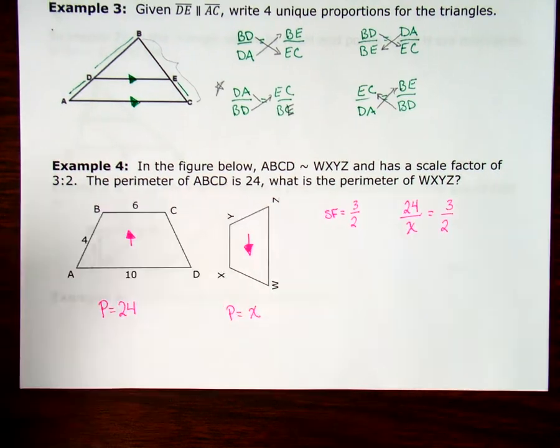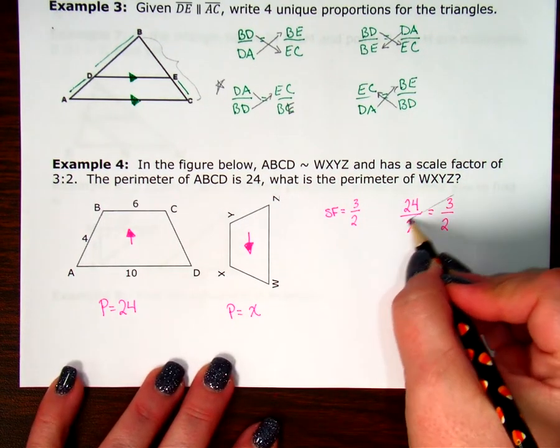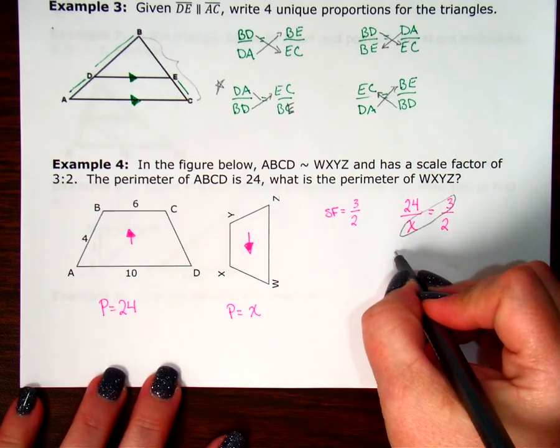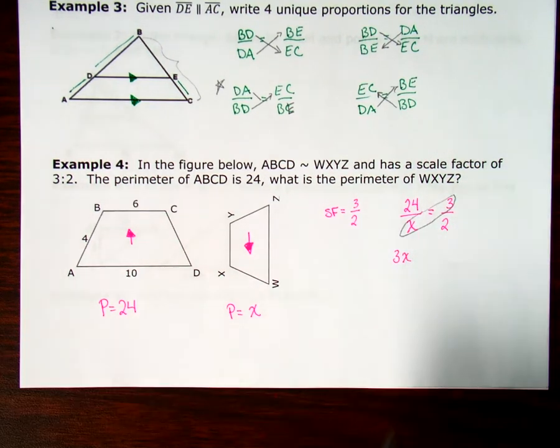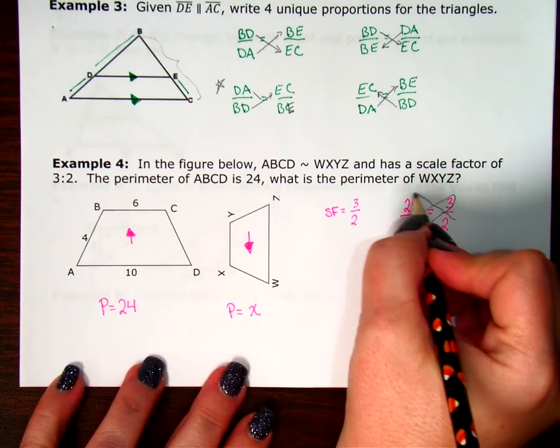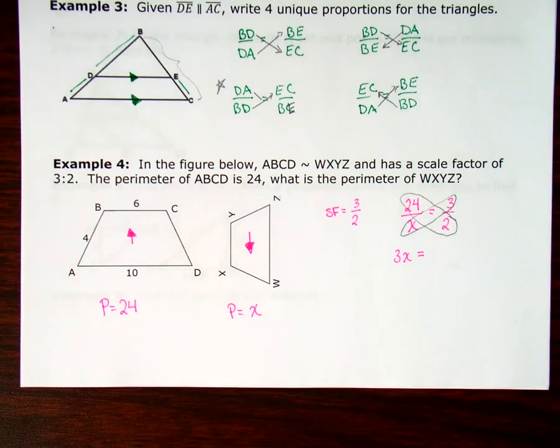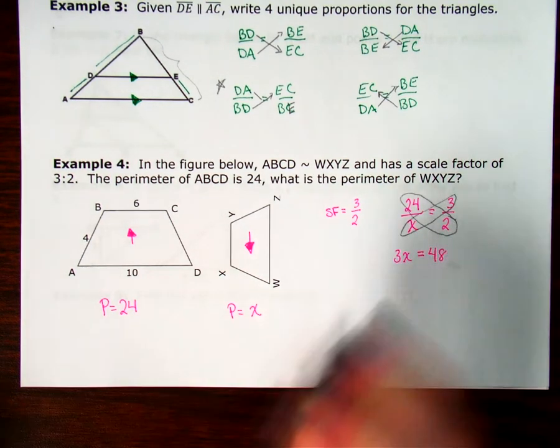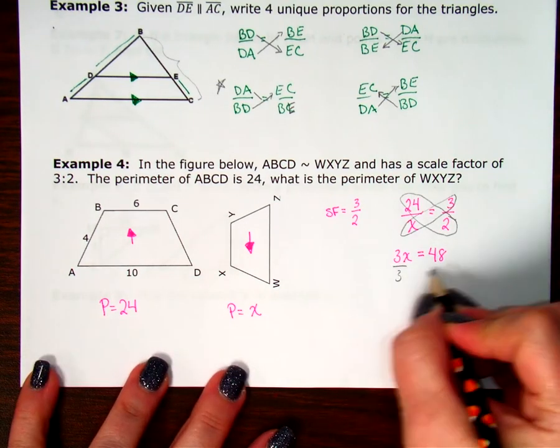So now, this can be cross-multiplied and solved. 3 times X is 3X. X equals 2 times 24, which is 48. Division property of equality. Divide by 3. Divide by 3.